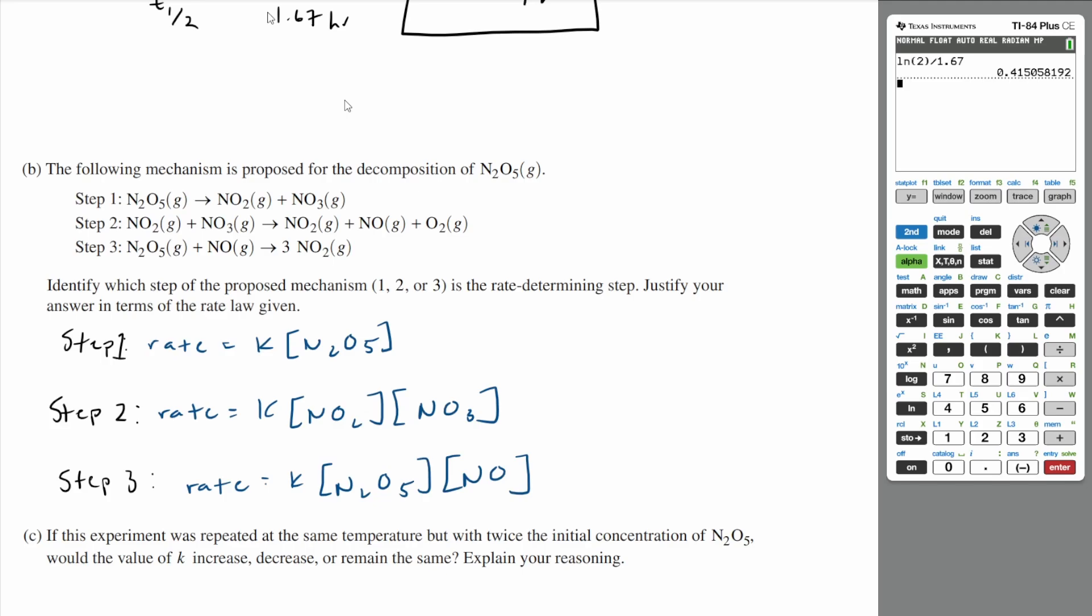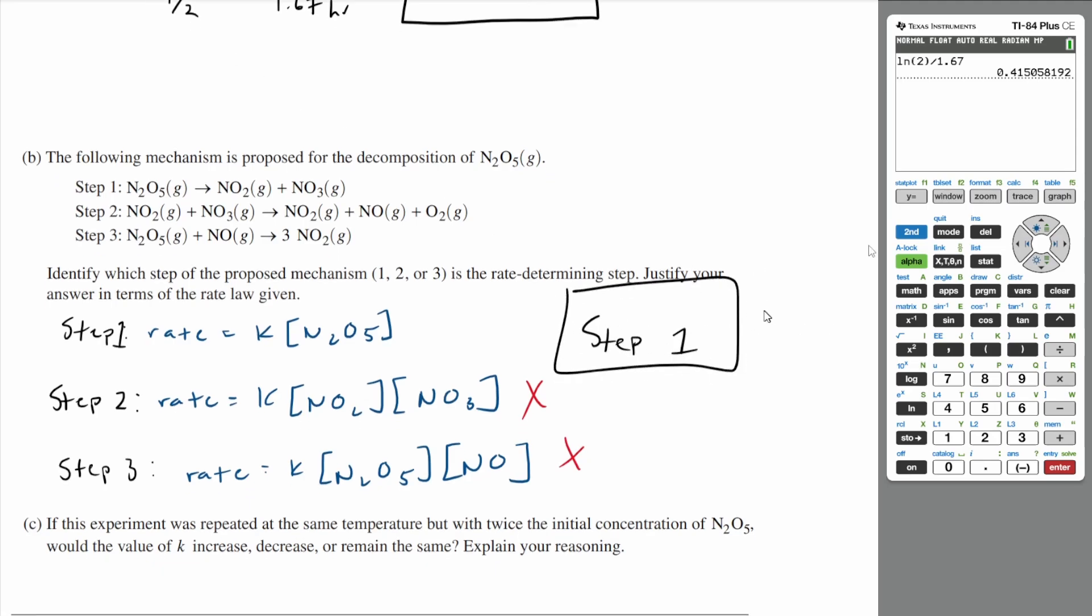And if you realize both these are wrong. And the first step is what matches with our overall rate law. So step one is going to be the rate determining step. So step one. Let's go on to part C.